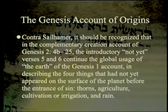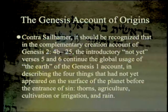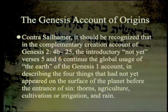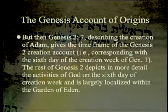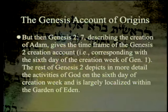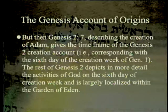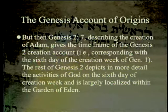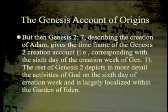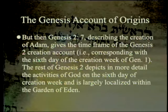The 'not yet' passage describes four things that had not yet appeared on the surface of the planet before the entrance of sin: thorns, agriculture, cultivation or irrigation, and rain. Genesis 2:7, describing the creation of Adam, gives the timeframe corresponding with the sixth day of creation week. The rest of Genesis 2 depicts in more detail God's activities on day six, and is largely localized within the Garden of Eden.